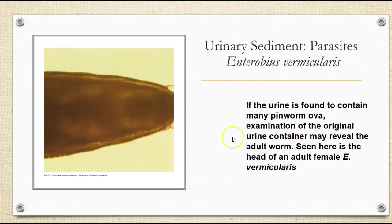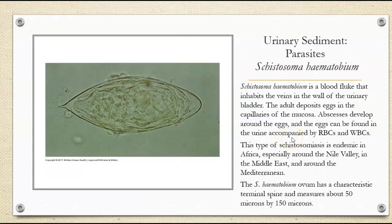This is the adult female. If the urine is found to contain many pinworm ova, examination of the original urine container can sometimes reveal the adult worm. This is the head of an adult female Enterobius vermicularis. Schistosoma haematobium is another parasite we can see in the urine — a blood fluke that will inhabit the veins in the walls of the urinary bladder. The adult will deposit eggs in the capillaries of the mucosa. We can see abscesses that develop around the eggs, and then eggs in the urine accompanied by red cells and white cells. This type of schistosomiasis is endemic in Africa, the Nile Valley, Middle East, and around the Mediterranean. It has a characteristic terminal spine, and measures about 50 microns by 150 microns.